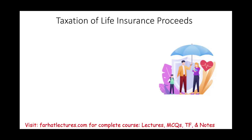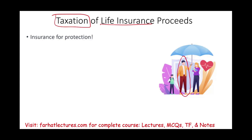Welcome to this session in which we will discuss the taxation — or lack of taxation — of life insurance proceeds. Insurance is a form of protection. For example, one individual, the breadwinner, is working, married with two kids and a wife. They will buy insurance so that in case something happens to the breadwinner and he passes away, the insurance company will provide money to the family so they can pay the rent, pay the mortgage, send the kids to school, and so on.